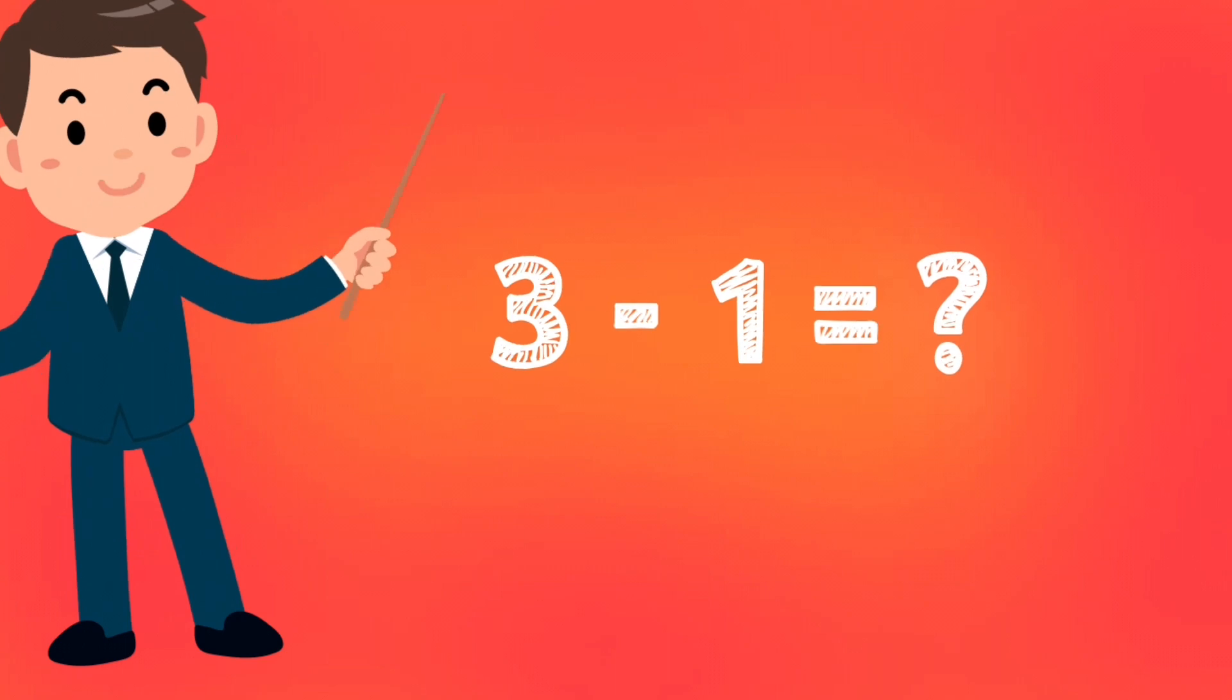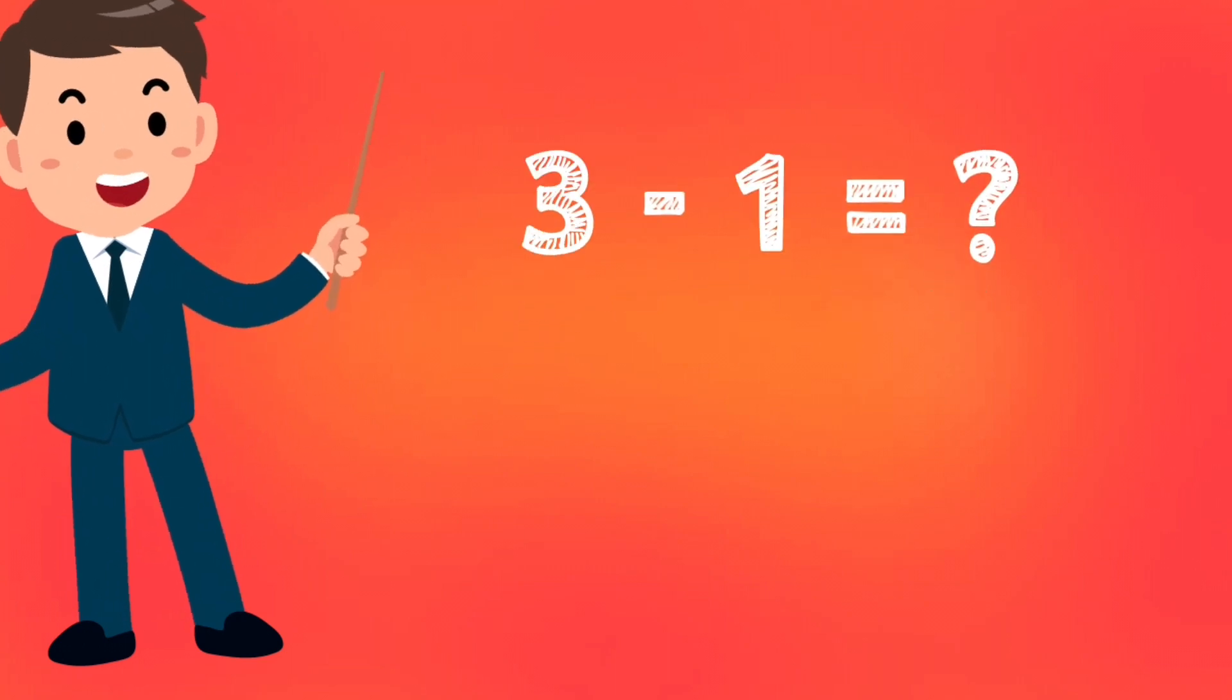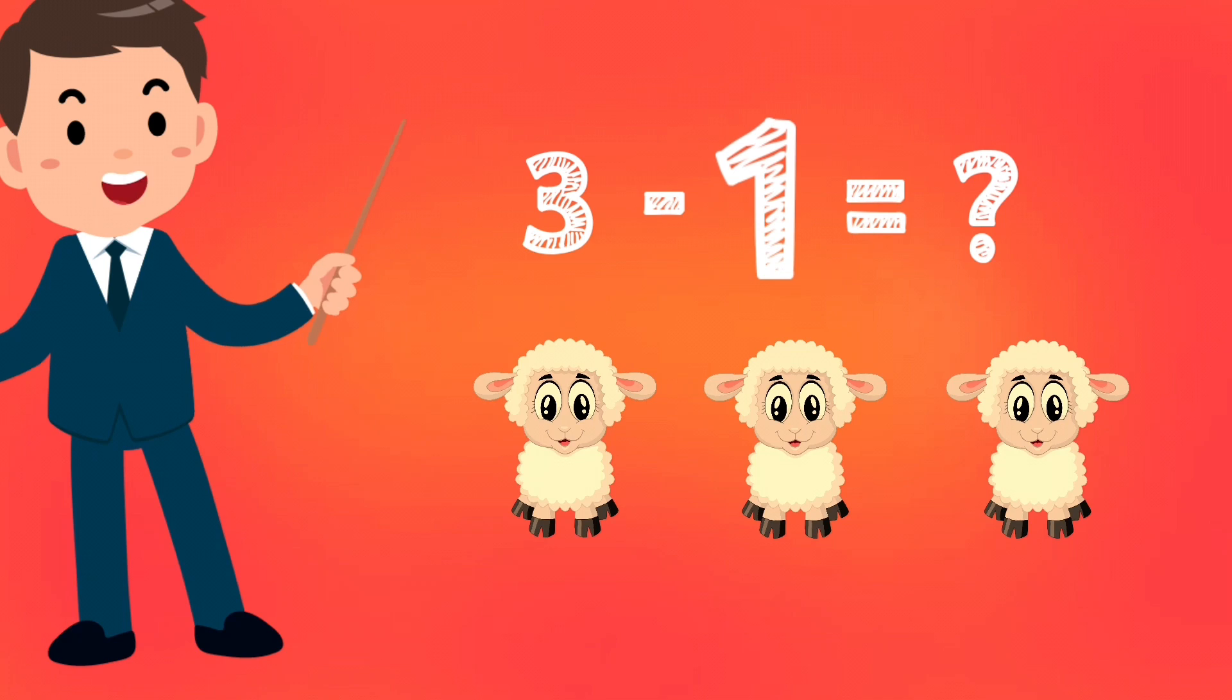Let's go ahead with subtraction. Let's find 3 minus 1 equals how much. Three sheep minus one, that is, take away or remove one sheep.